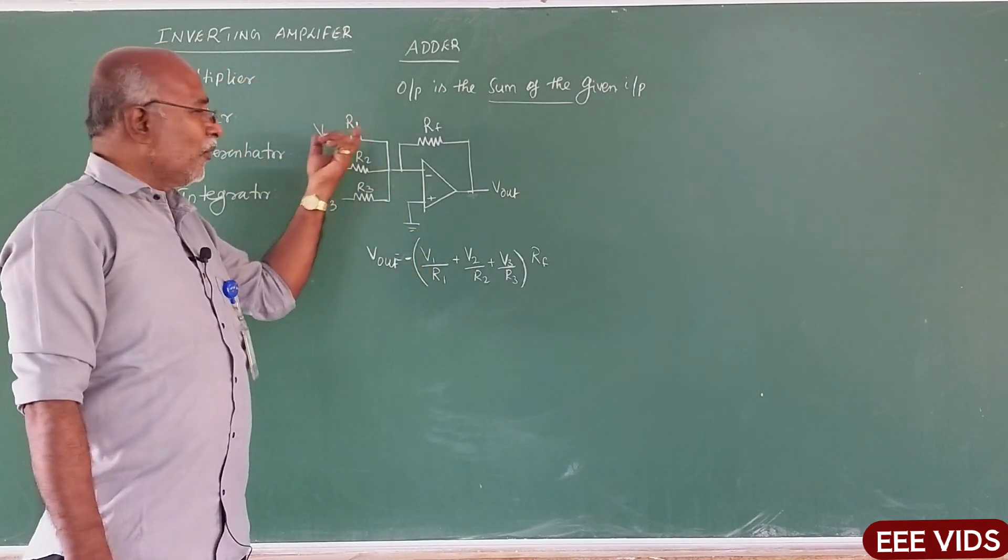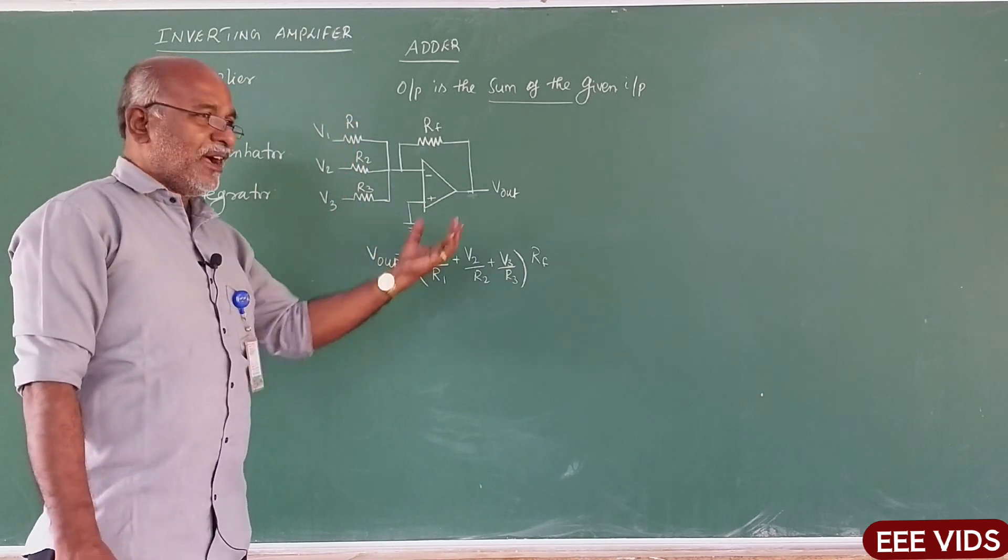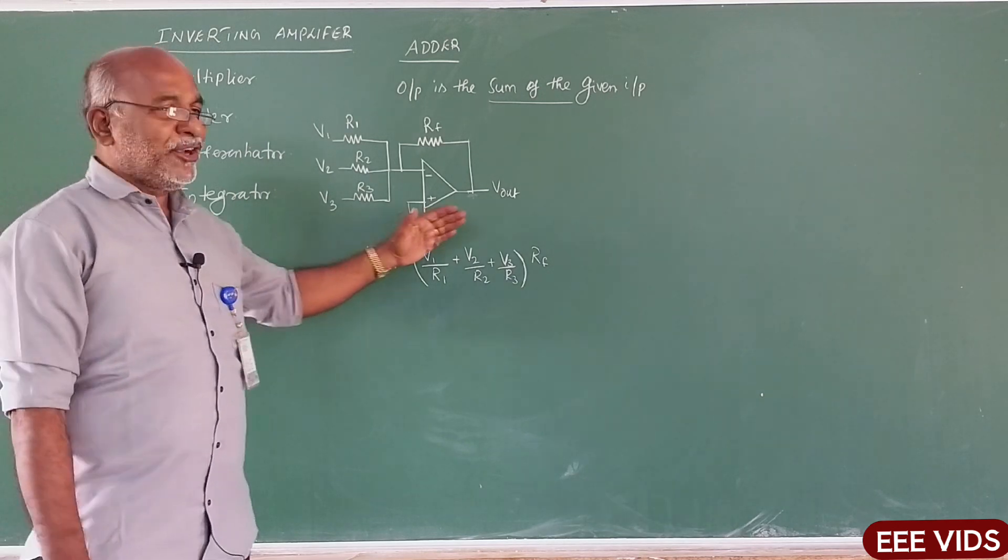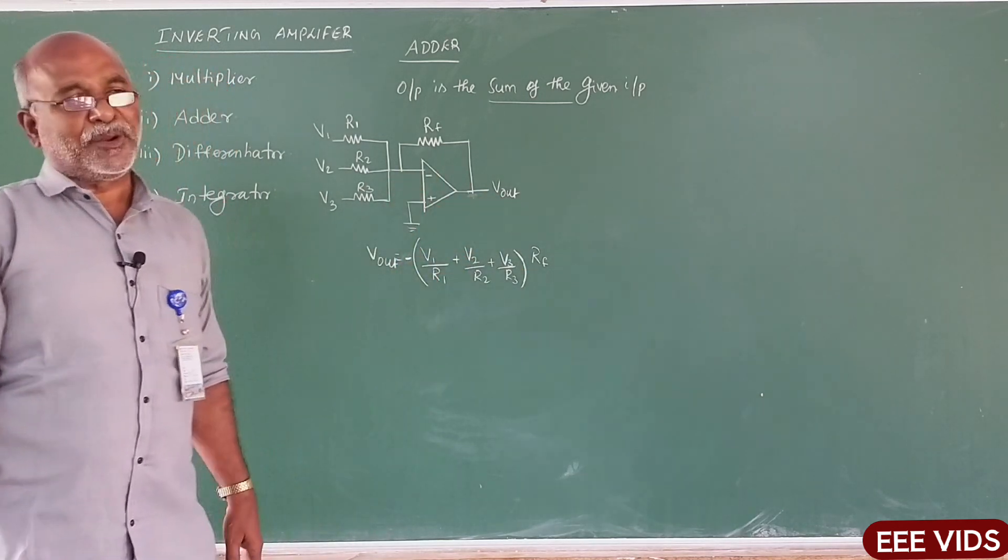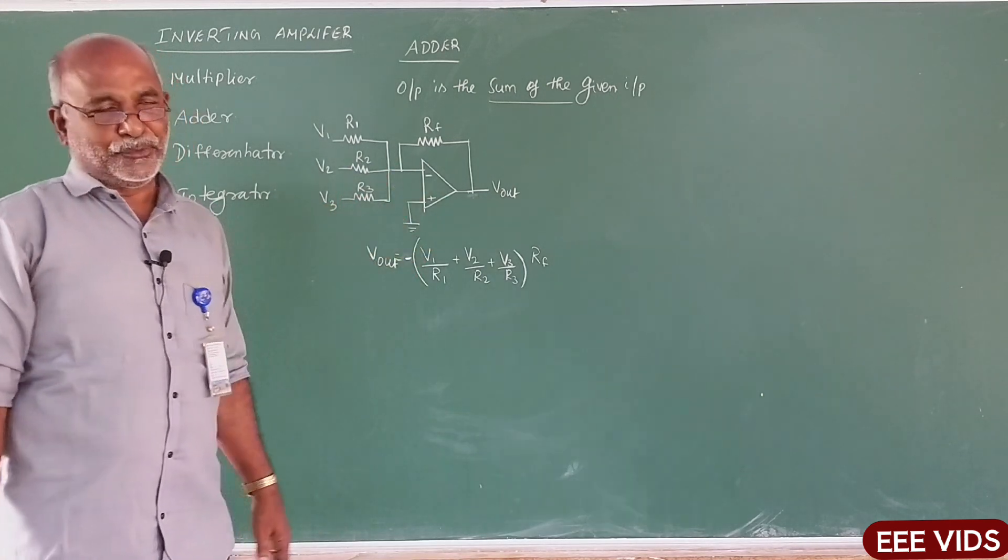So feedback resistance over input resistance. R1, R2, R3. V1, V2, V3. Common, one input applied, VIN value. Here different inputs. All inputs add. Inverting Amplifier output is the sum of the given input.